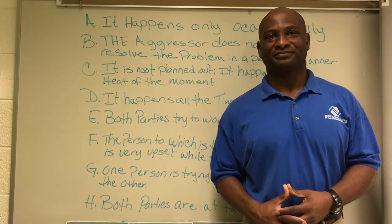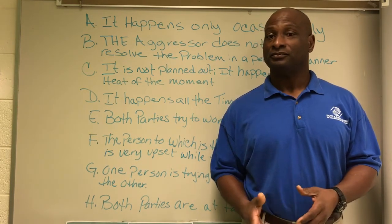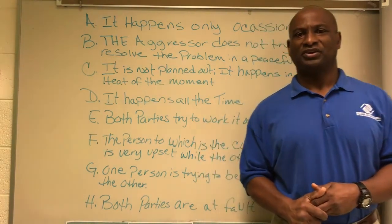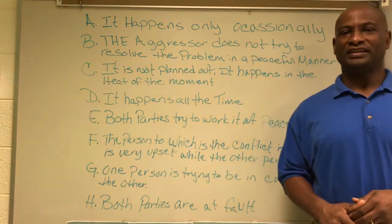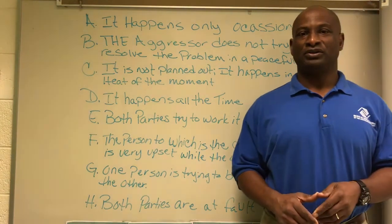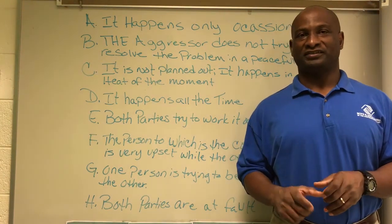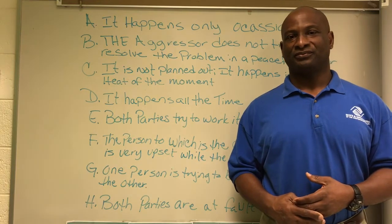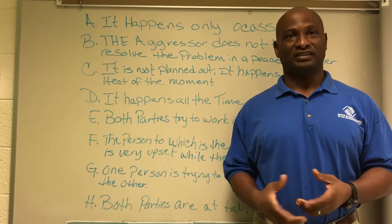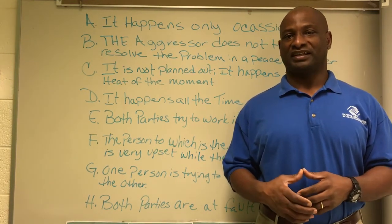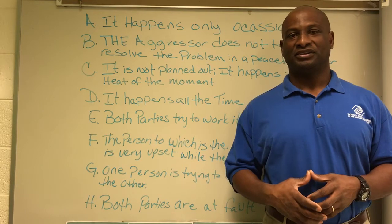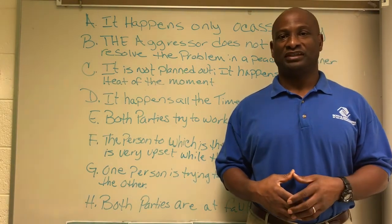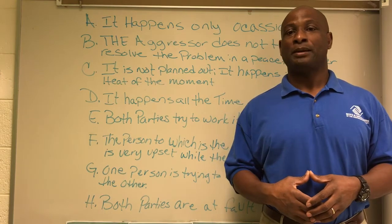I'll give you a moment. Now that you have your material, let's get started by writing on one sheet of paper: Normal Conflict — just write it on the top of one of those sheets. And on the other paper, at the top, write Bullying. So at the top of one you'll write Normal Conflict, and the other one at the top you'll write Bullying.